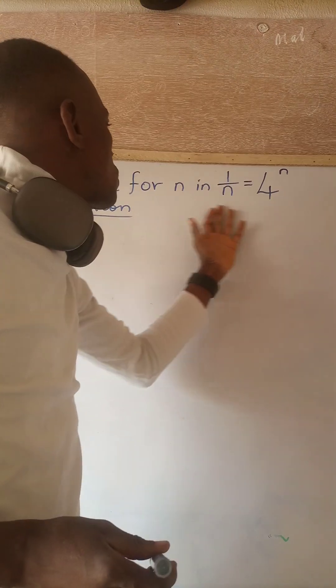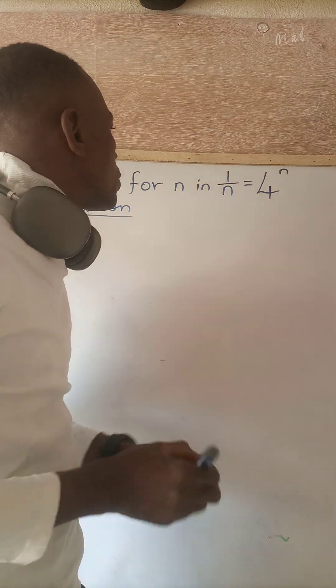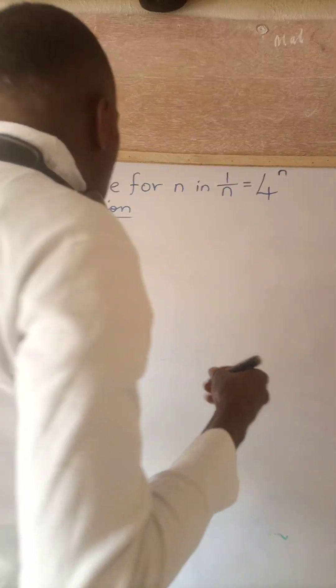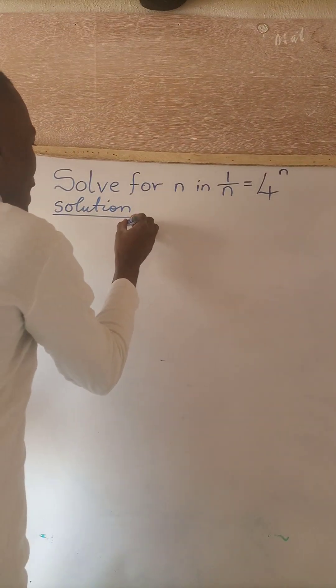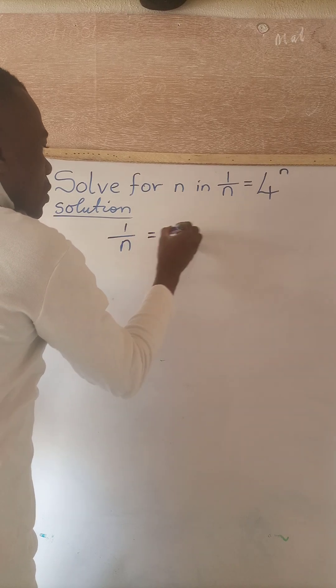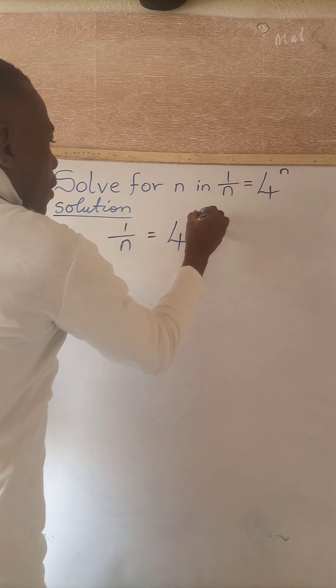Hello viewers, let's quickly solve this exponential equation that we have on the board. The question says 1 over n is equal to 4 power n.